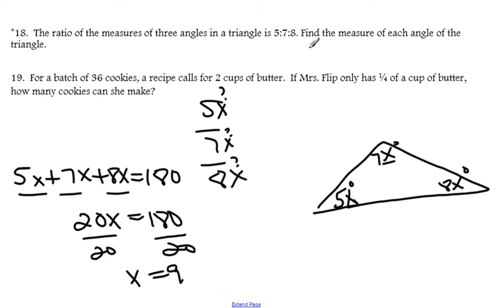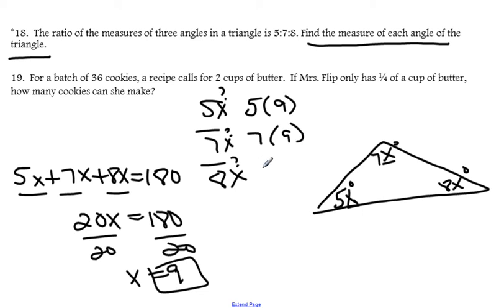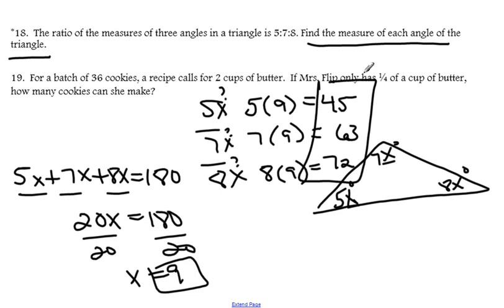Now, they want to know the measures of each angle. So, we are going to take that 9, our greatest common factor, and substitute it back in to each of the ratios, greatest common factor times that number. So, 5 times 9 is 45. 7 times 9 is 63. And 8 times 9 is 72. So, these measures, 45, 63, and 72, represent the interior angles of a triangle.